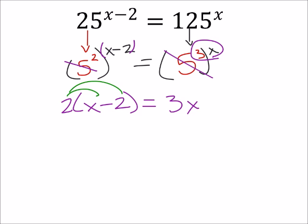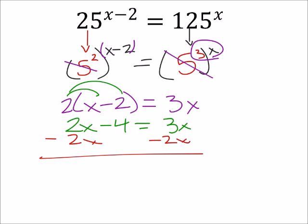And now I just need to solve for x, so I'll distribute the 2. 2x minus 4 equals 3x. And now I'll subtract 2x's from both sides. And I get x equals negative 4.